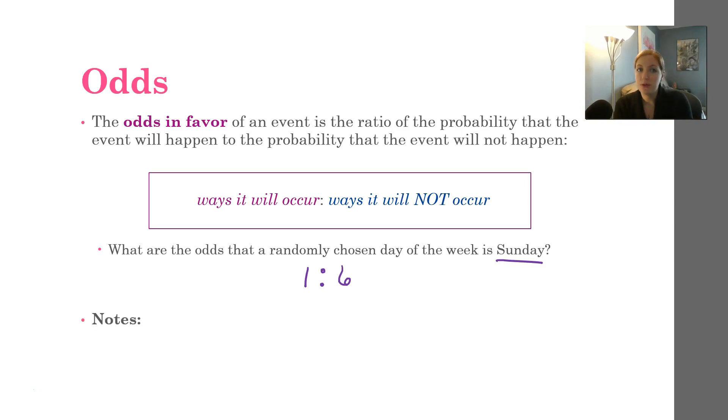Some notes on odds. The two numbers should add up to the total number of outcomes. So you see, one plus six adds up to the total number of days of the week, which is seven. And this will be happening for all odds. So it's a good way to double check yourself. Odds will also always be whole numbers. You will not have any decimals, which is nice because you don't really have to do any calculations besides subtracting. So, pretty nice overall.